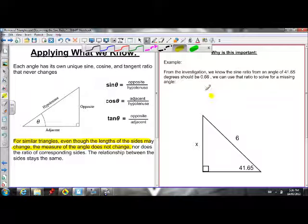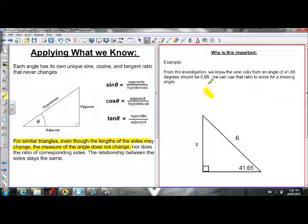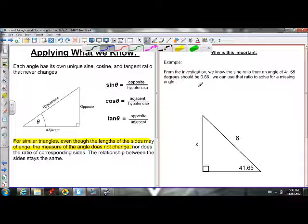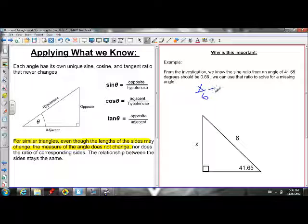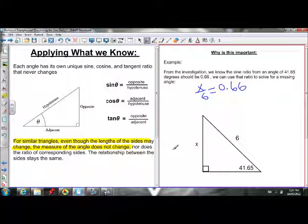So we know x over 6 should be equal to 0.66. So we could solve for x. We should multiply 0.66 by 6.